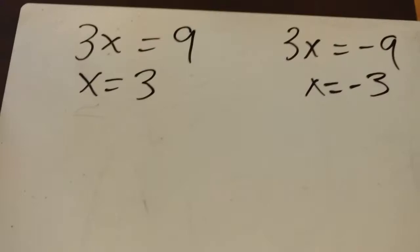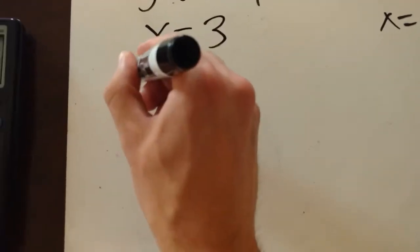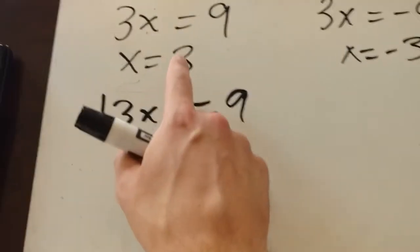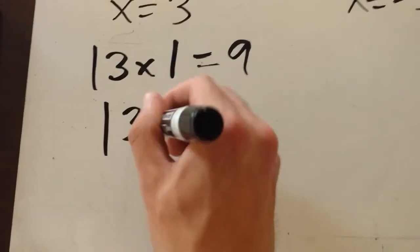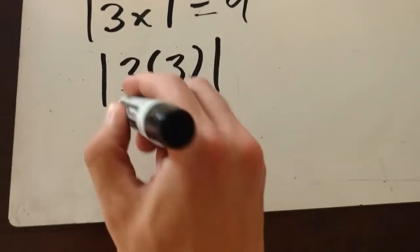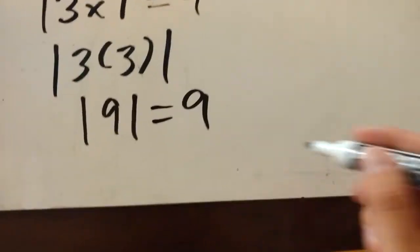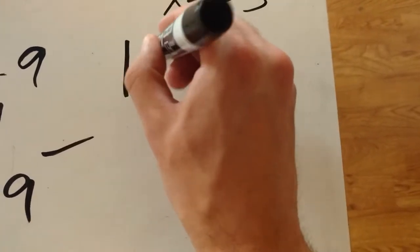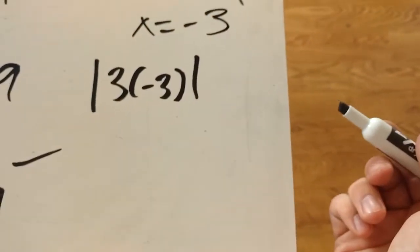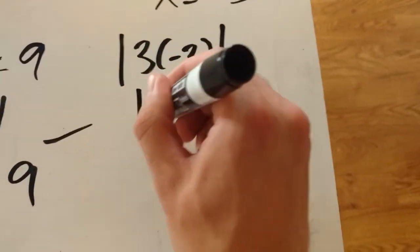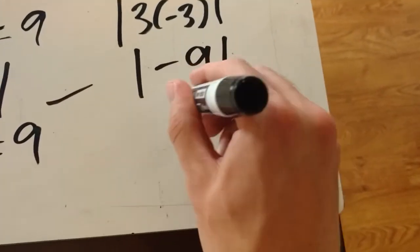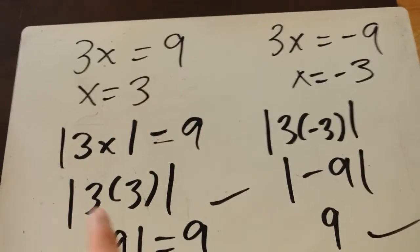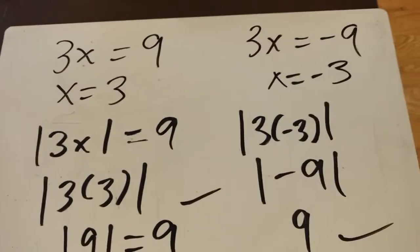We need to plug both x-values back into the original equation, |3x| = 9. If x = 3: the absolute value of 3×3 is the absolute value of 9, which is 9. That checks out, so x = 3 is a valid answer. For x = −3: the absolute value of 3×(−3) is the absolute value of −9, which is positive 9. So x = −3 is also a valid answer. We could have x = 3 or x = −3.